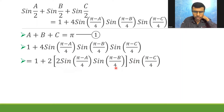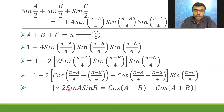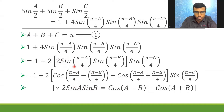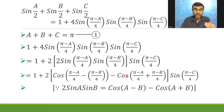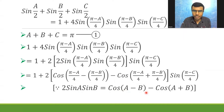Now observe what I'm going to do. I'm going to write this 4 as 2 into 2, and write 2·sin((π−a)/4)·sin((π−b)/4). Now, 2·sinA·sinB is nothing but cos(A−B) minus cos(A+B). In place of A and B, I have (π−a)/4 and (π−b)/4. So I have cos((π−a)/4 − (π−b)/4) minus cos((π−a)/4 + (π−b)/4).